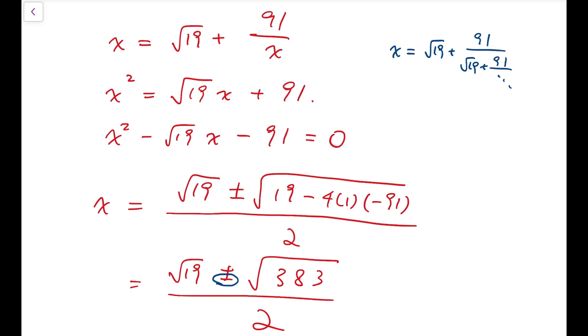Now the argument goes as follows. Because that number, root 19 minus root 383 all divided by 2, satisfies this equation, that means for this x, I can replace x by root 19 plus 91 over x, or vice versa, the other way around.